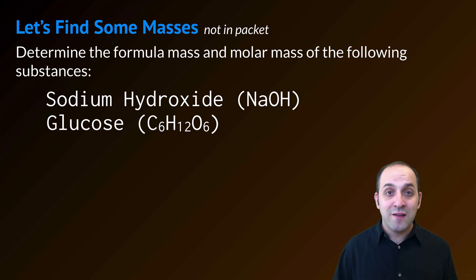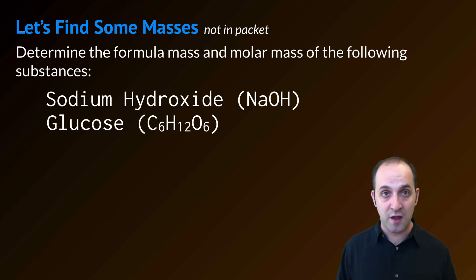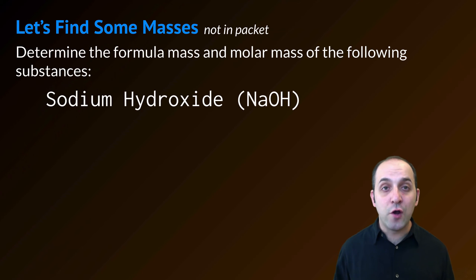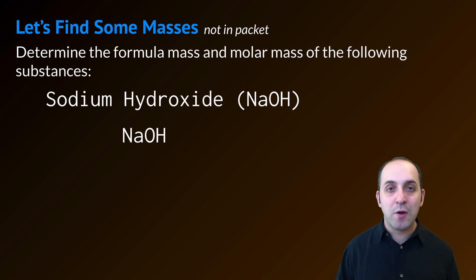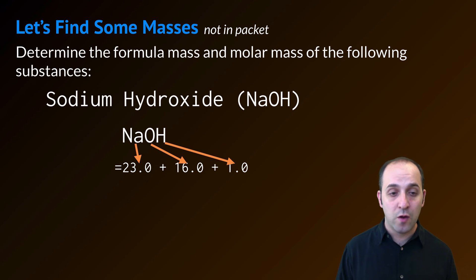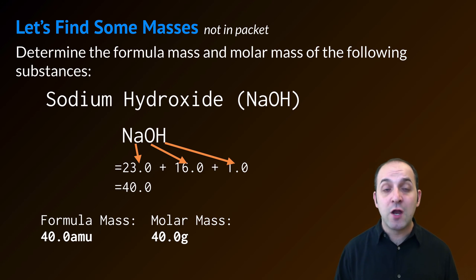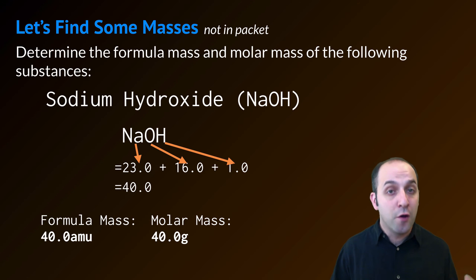Let's practice finding some molar masses. Determine the formula mass and the molar mass of sodium hydroxide, NaOH, and glucose, C₆H₁₂O₆. Let's do sodium hydroxide first. Going to the periodic table: sodium taken to the nearest tenth is 23.0, oxygen is 16.0, and hydrogen is 1.0. Adding them all together gives 40.0. As a formula mass that's 40.0 atomic mass units; as a molar mass that's 40.0 grams. If I weigh out 40.0 grams of sodium hydroxide in the lab, I'll have 6.02 × 10²³ formula units of that compound.